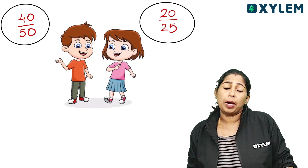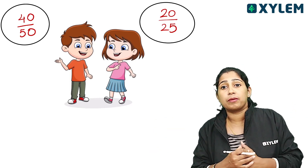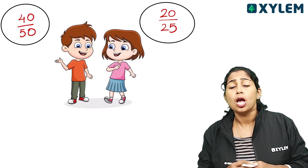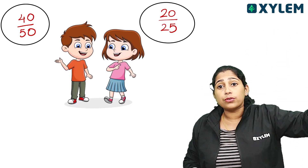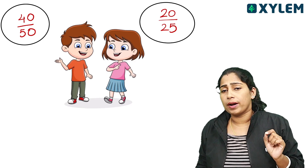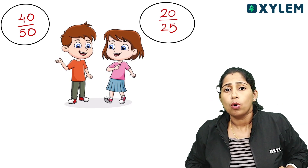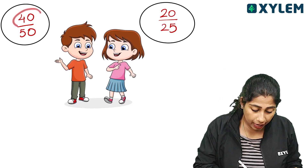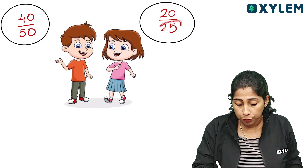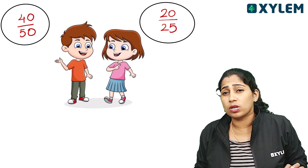One person — a boy — scored 40 out of 50. A girl scored 20 out of 25. Now, if the boy is 40 out of 50 and the girl is 20 out of 25, in this situation it is a bit difficult to compare.